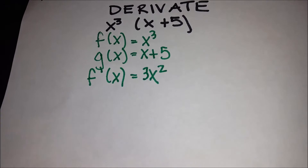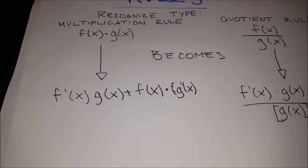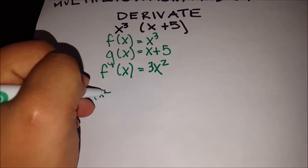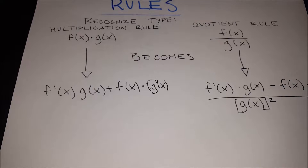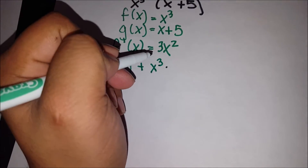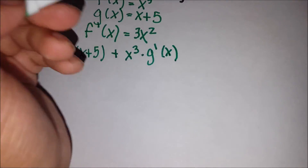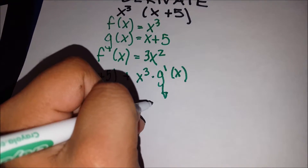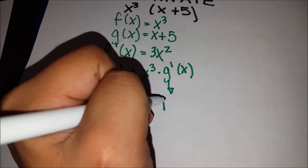If you don't know how to find the derivative of a basic function, go ahead and watch my other videos. Next, we multiply by the second function, which is x plus 5. Then we add the original function, x cubed, multiplied by the derivative of the second function, g of x, which is x plus 5. The derivative of x plus 5: x to the first power minus 1 gives x to the zero which is 1, and the constant 5 goes to 0, so g prime of x equals 1.